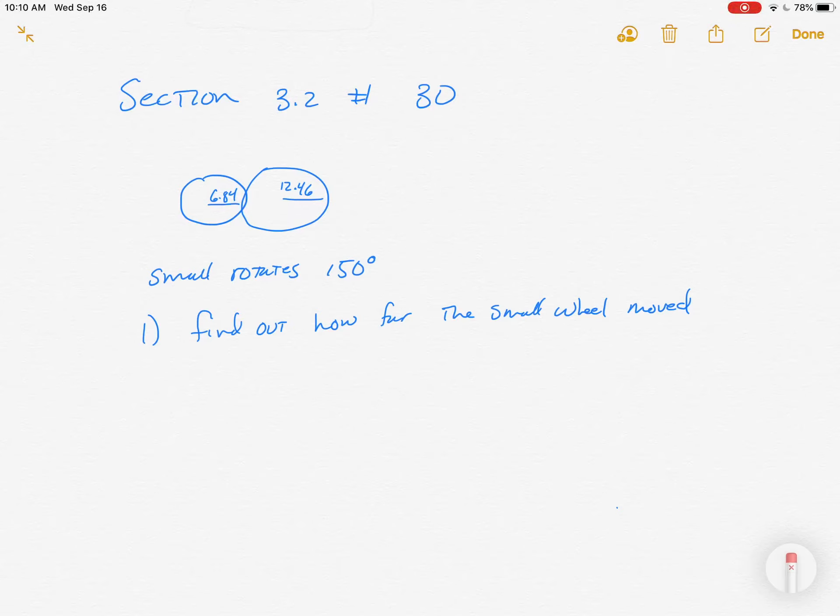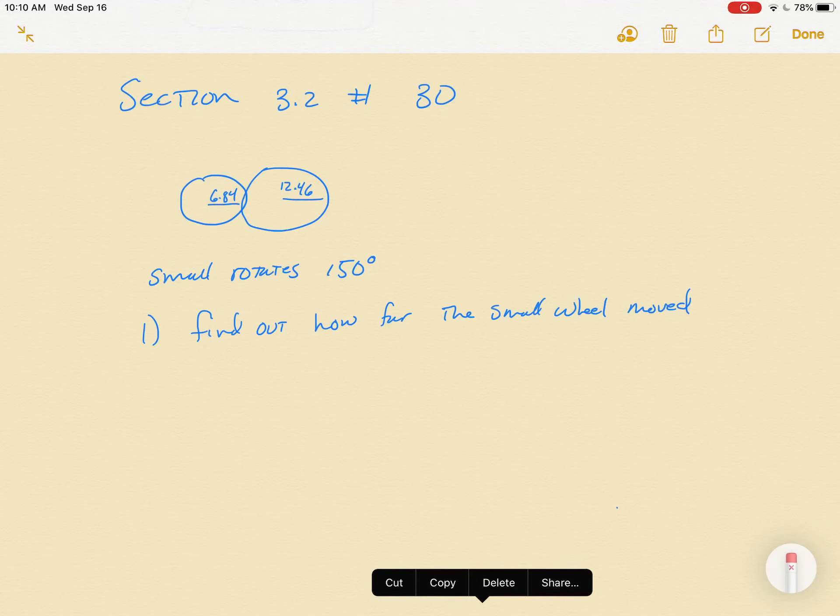I had a request to do number 30 from section 3.2. It's one that's done in the notes itself, so if you followed that, you'd be able to do it, but I can do it again. So in number 30, we have two wheels, one smaller than the other. They're like gears. One's driving the other, just like in the notes one.